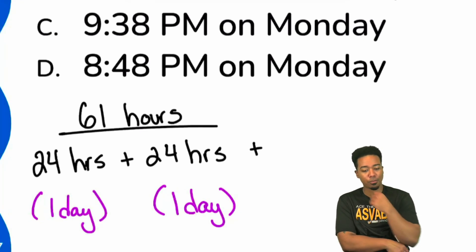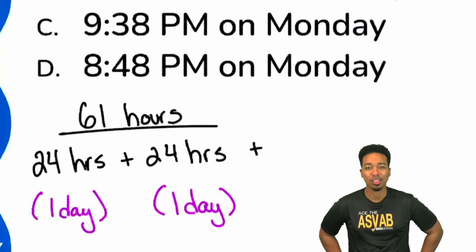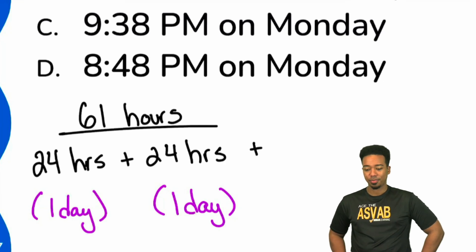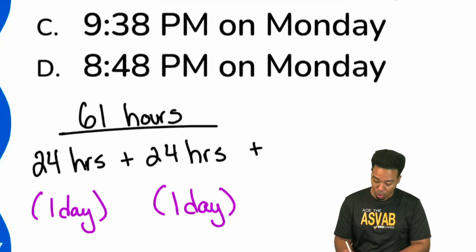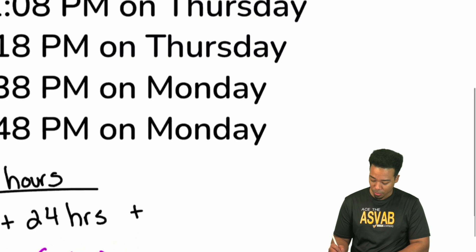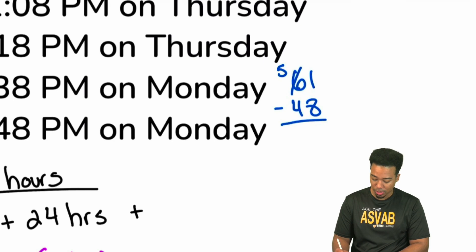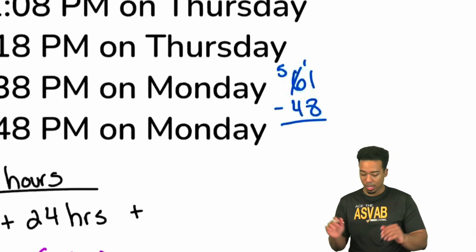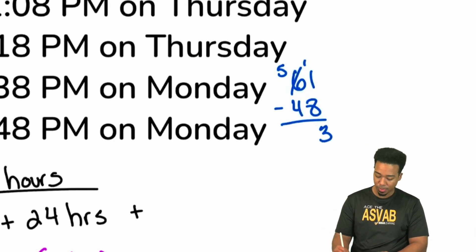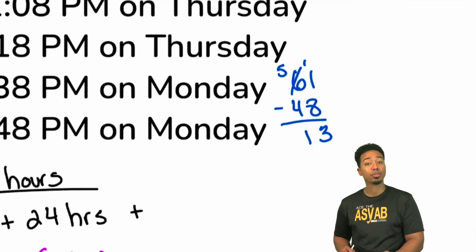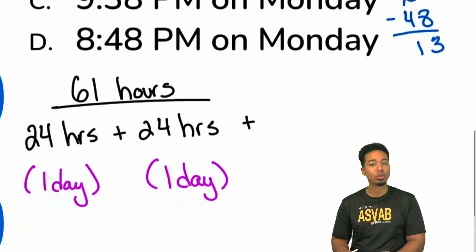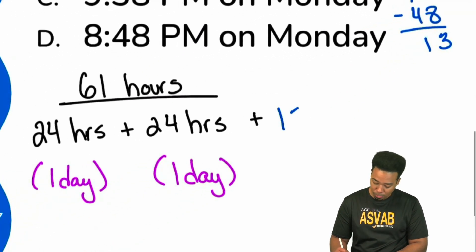That's 13 hours, and we can show that and prove that right over here. If we just say 61 minus 48, we can borrow if we need to, no problem. We say that we have 11 minus 8, that's 3, 5 minus 4 is 1, so 13. We have 13 remaining hours.